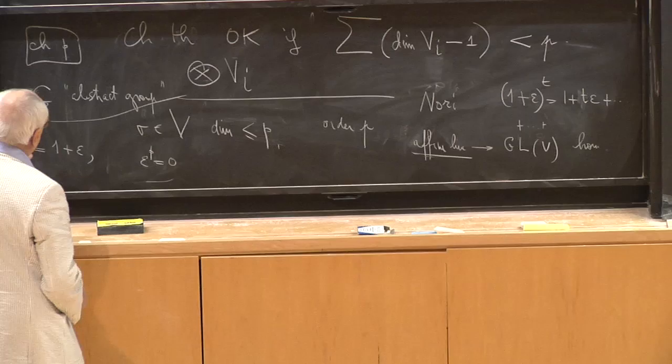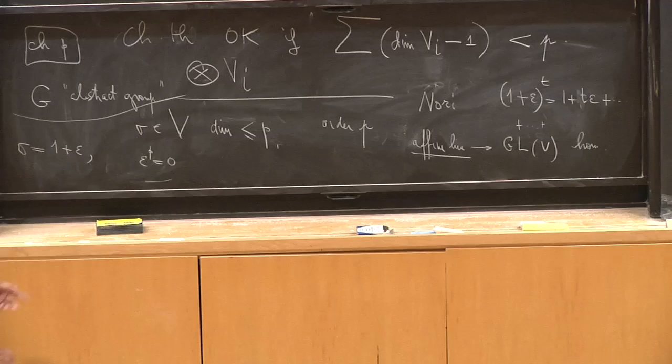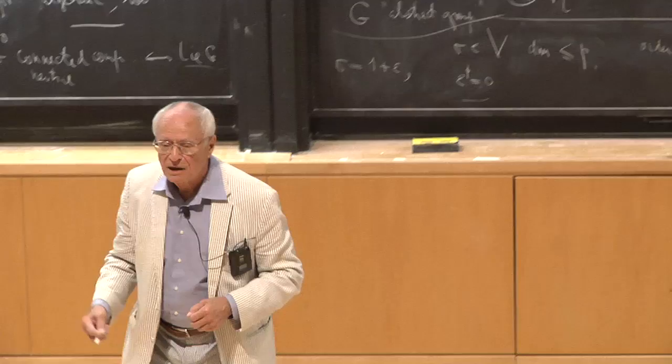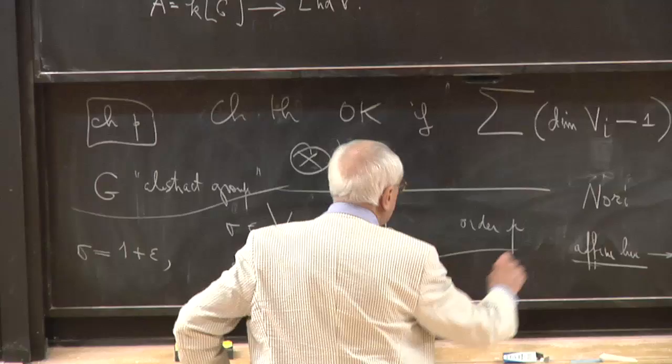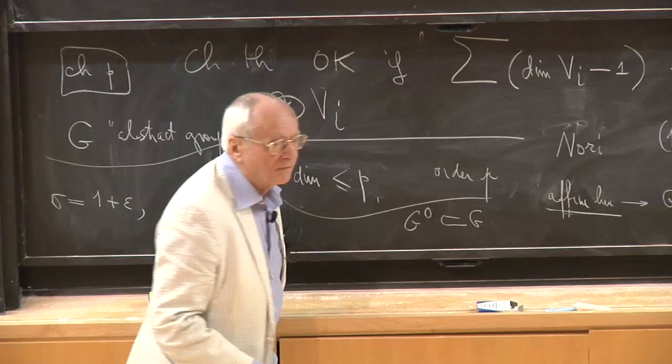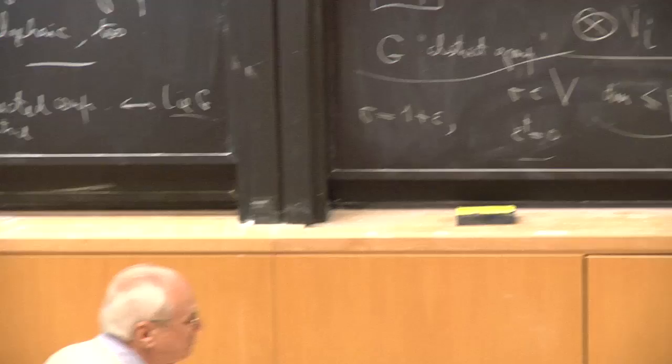The first idea was to close the group under Zariski closure. The second idea is to close it under that operation — every time you find an element of order p, you replace it by a connected one-parameter subgroup. In that way, you arrange that the connected component has index prime to p in G. Then you can use the theory of weights and roots, and you're in business. So that is Chevalley's theorem in characteristic p.